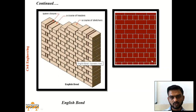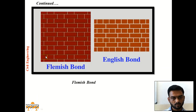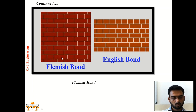This is the alternate layer of stretcher, and this is the alternate layer of headers. In this Flemish bond, you can see alternate headers and stretchers are placed in every layer of brick.